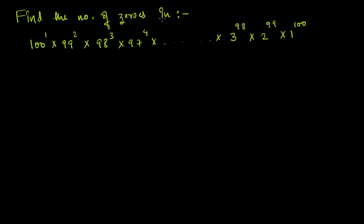Find the number of zeros in 100 to the power 1 times 99 to the power 2 times 98 to the power 3, continuing till 1 to the power 100. Before proceeding, let us first see what this pattern actually is, because the number of zeros will be the same as the number of fives we can count in this whole product.